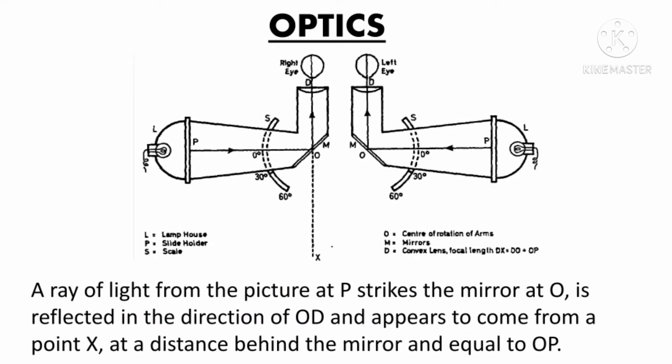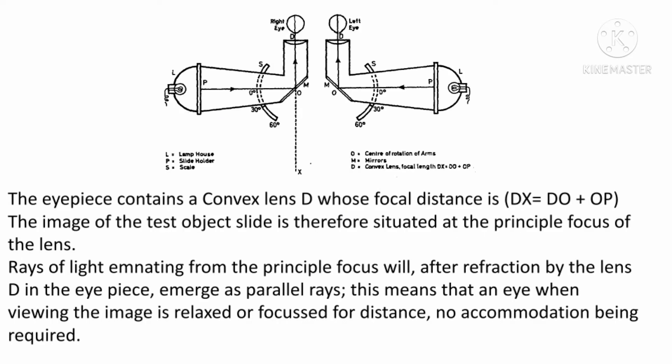Now optics of synaptophore. As you can see in this figure, a ray of light from point P strikes the mirror at O, is reflected in the direction of OD and appears to come from a point X at a distance behind the mirror equal to OP. The eyepiece contains a convex lens D whose focal length is DX equal to DO plus OP. Synaptophore's eyepiece is plus 6.50 sphere convex lens. This means that an eye when viewing the image is relaxed or focused for distance.